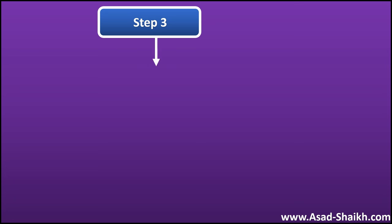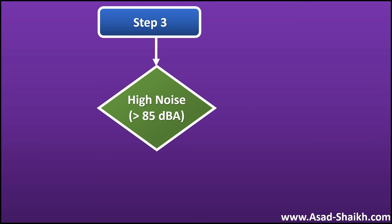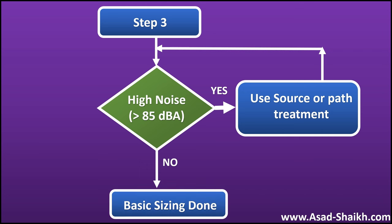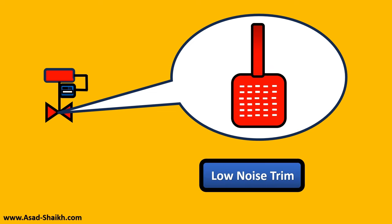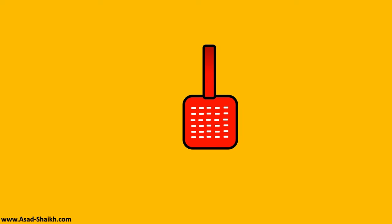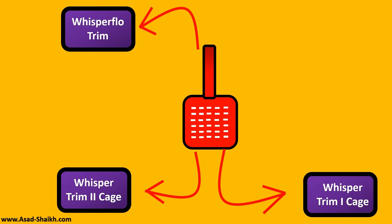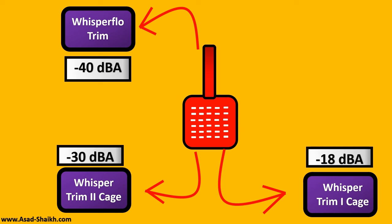Step 3 is to check for noise. Typically in projects the limit is 85 dBA, though it can be 90 or 80 dBA depending on project requirements. If noise is present, you apply source and path treatments and re-run the calculations. One important source treatment is the low-noise trim, which shifts the frequency so high that it won't damage hearing. For example, Fisher's Whisper trim series — Trim 1, Trim 2, and Whisper Flow — can reduce noise by 18 dBA, 30 dBA, and up to 40 dBA respectively, so you choose the trim based on how much noise reduction is needed.